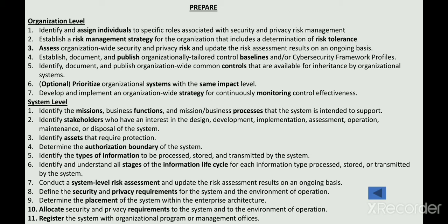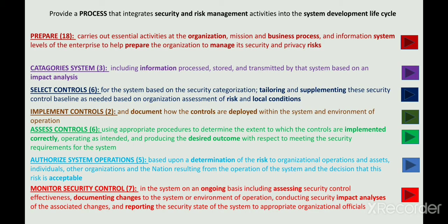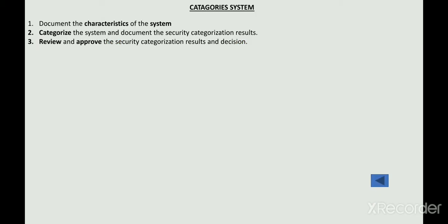In the second stage, Categorization, you document the system characteristics, then categorize the system, and then get this system categorization approved.